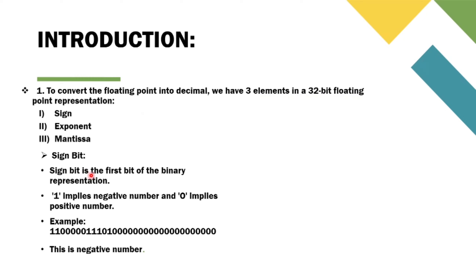The sign bit is the first bit of the binary representation — that is, the leftmost bit. It is also known as the MSB or most significant bit. A value of 1 implies a negative number and 0 implies a positive number. In this example, the first bit of the binary representation is 1, so this is a negative number.